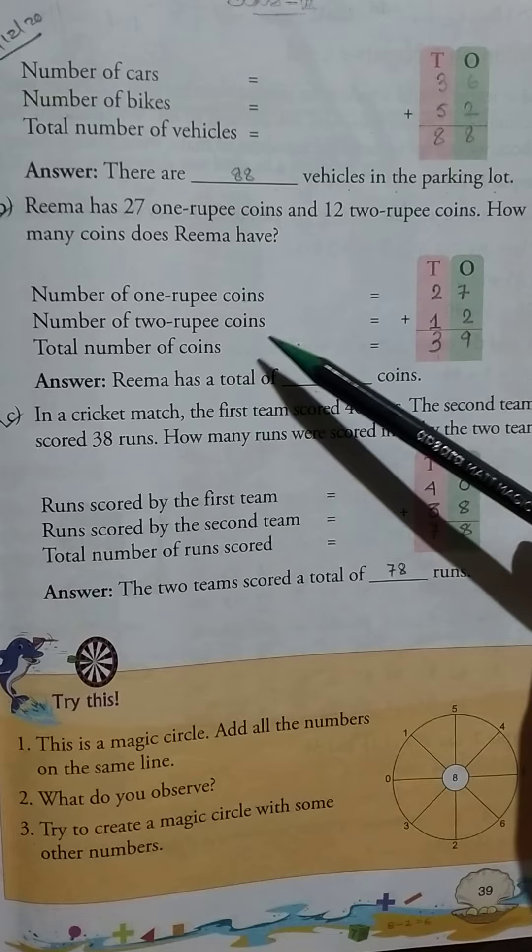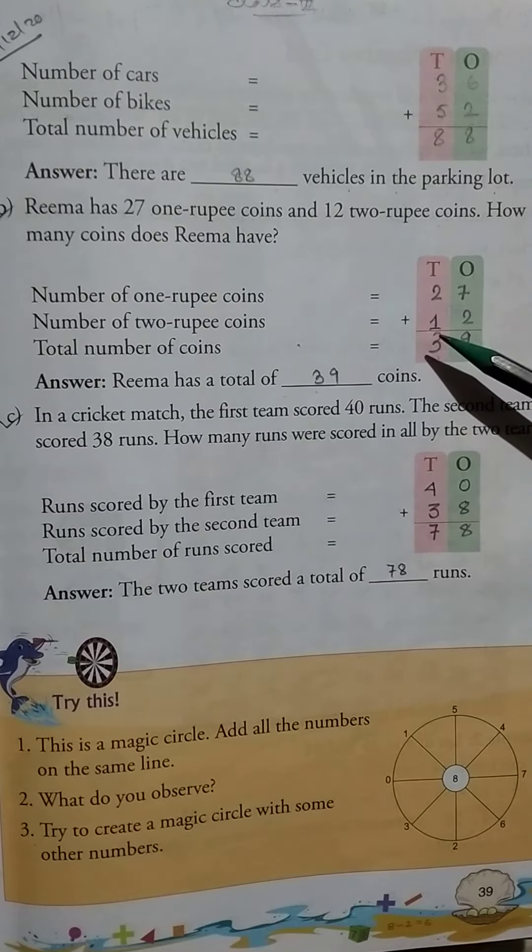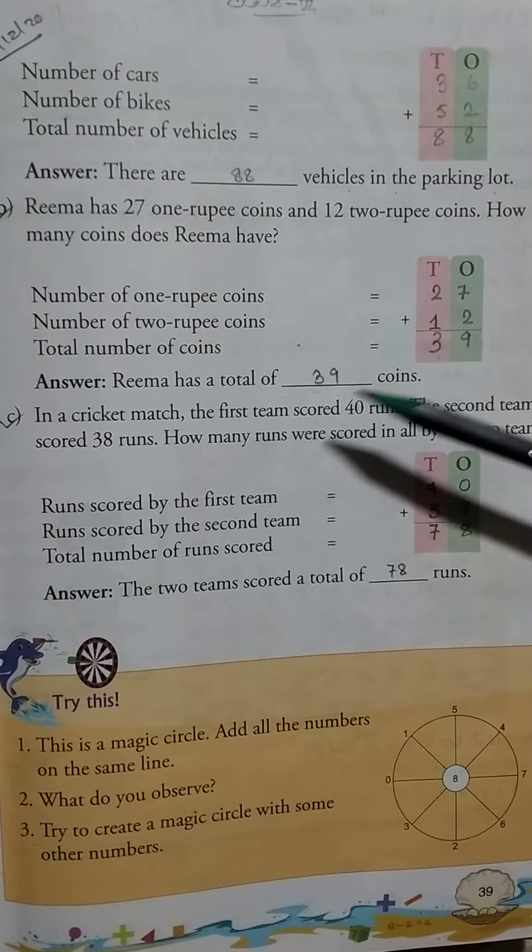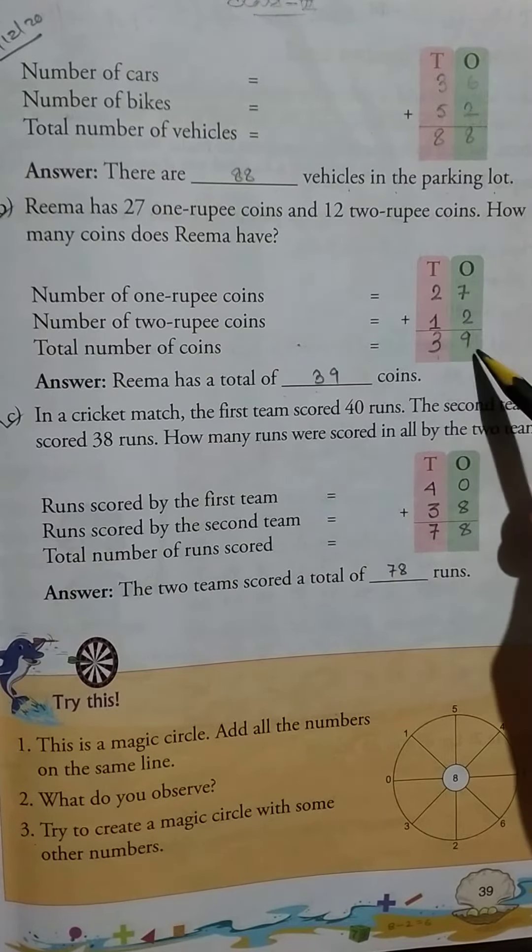Number of one-rupee coins: 27. Number of two-rupee coins: 12. Total number of coins equals 39. Rima has a total of 39 coins.